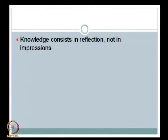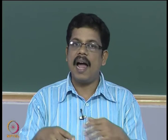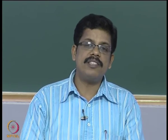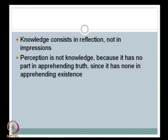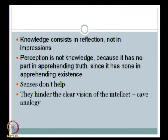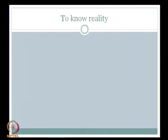Plato ultimately tells us that knowledge consists in reflection, not in impressions. Reflection is done by the mind, and there is absolutely no role for sense perception. Perception is not knowledge because it has no part in apprehending truth, since it has none in apprehending existence; and the senses do not help — they hinder the clear vision of the intellect, as shown in the cave analogy.